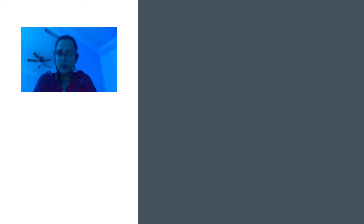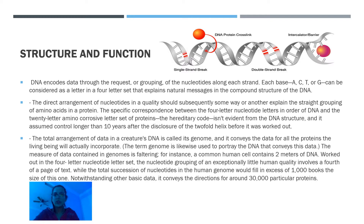Genes carry biological information that must be copied accurately for transmission to the next generation each time a cell divides to form two daughter cells. DNA encodes information through the order or sequence of nucleotides along each strand. Each base — A, C, T, or G — can be considered as a letter in a four-letter alphabet that spells out biological messages in the chemical structure of the DNA. The linear sequence of nucleotides in genes must somehow spell out the linear sequence of amino acids in a protein. The exact correspondence between the four-letter nucleotide alphabet of DNA and the three-letter amino acid alphabet of proteins — the genetic code — took over a decade after the discovery of the double helix before it was worked out.